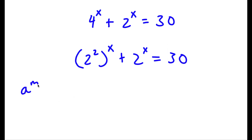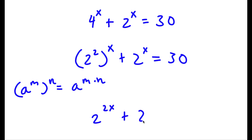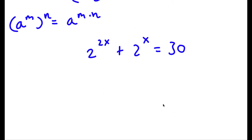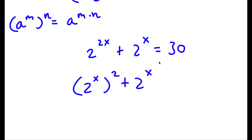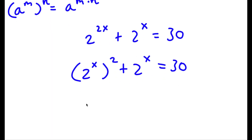Now, if I have something in the form a to the power of m to the power of n, this is the same thing as a to the power of m times n. So 2 to the power of 2 to the power of x is going to become 2 to the power of 2x, plus 2 to the power of x, which is equal to 30. Now I'm going to rewrite 2 to the power of 2x as 2 to the power of x to the power of 2. So I have that plus 2 to the power of x, which is equal to 30.